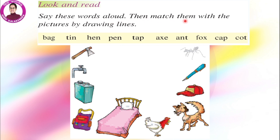Say these words aloud, then match them with the pictures by drawing lines. Let's see what the words are — say them after me: bag, tin, hen, pen, tap, axe, ant, fox, cap, cot.